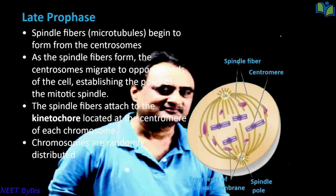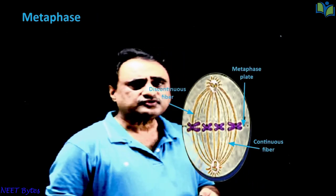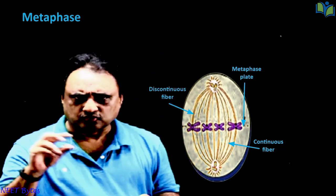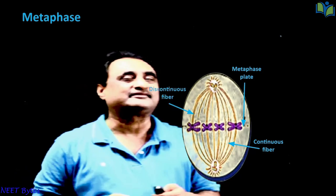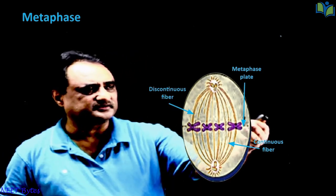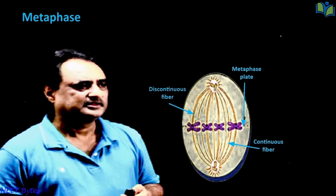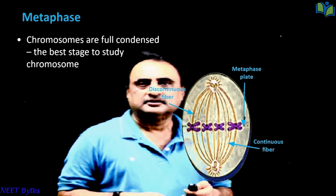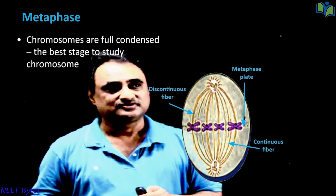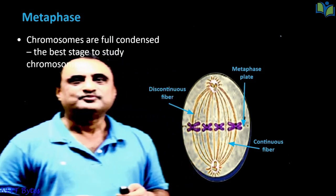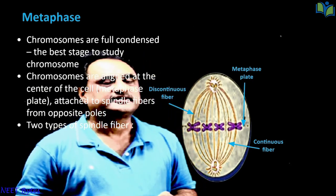In metaphase, all the chromatids or chromosomes arrange themselves at the equatorial plate. The equatorial plate is not actually a plate-like structure; it is a hypothetical structure where all chromatids arrange themselves. Metaphase is considered the best stage for the study of chromosomes because the chromosomes are maximally condensed, allowing us to clearly observe them.